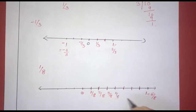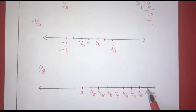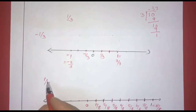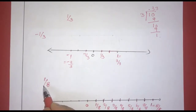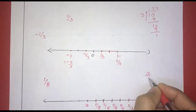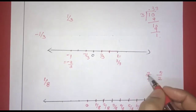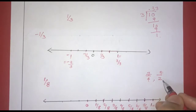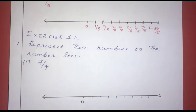So we have 4 by 8, 5 by 8, 6 by 8, 7 by 8, and 8 by 8 which is equal to 1. Now if we mark 1 by 8, we mark equal distances. In this way we mark the rational numbers on the number line — for example, marking 7 by 8.